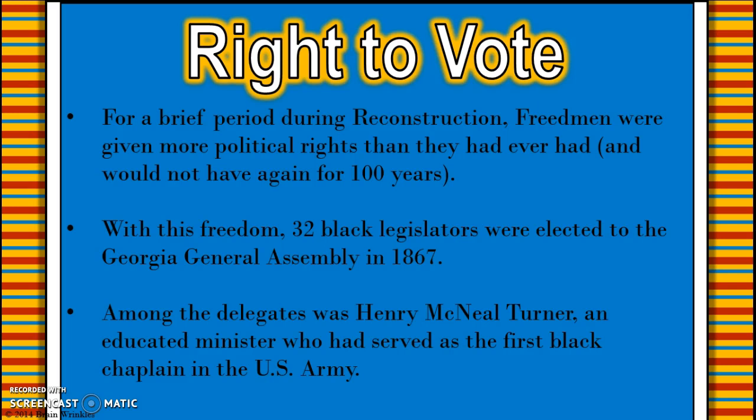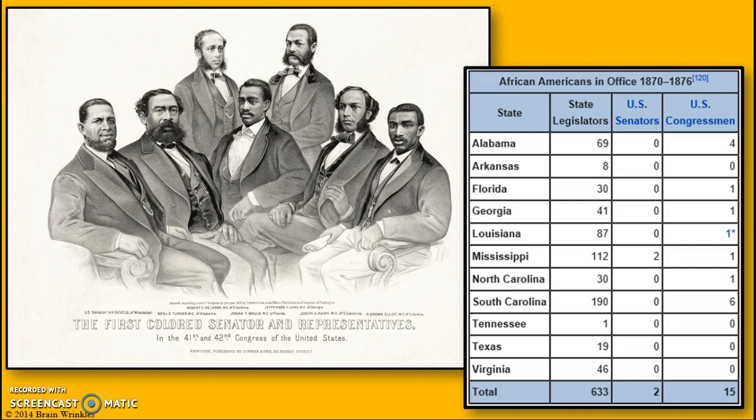For a brief period during Reconstruction, Freedmen were given more political rights than they had ever had, and they wouldn't see similar rights for a hundred years. With their freedom, 32 black legislators were elected to the Georgia General Assembly. Among those delegates was Henry McNeal Turner, an educated minister who had served as the first black chaplain in the United States Army. Here you can see an image of some of these senators and representatives, and a graphic of the various African American legislators and congressmen from 1870 to 1876.